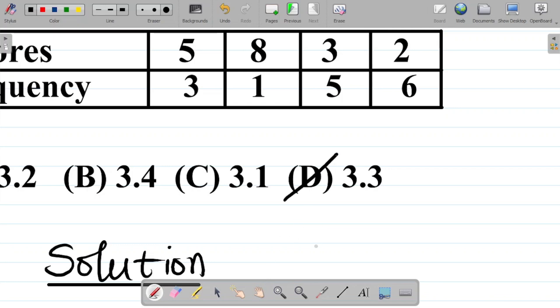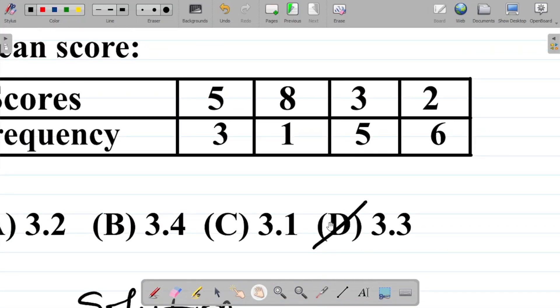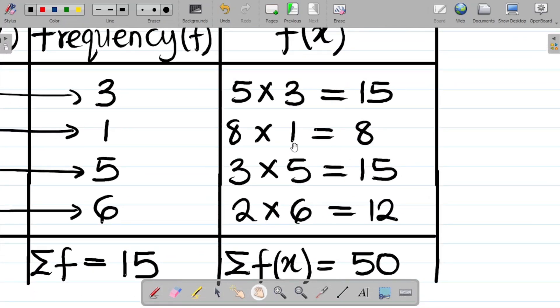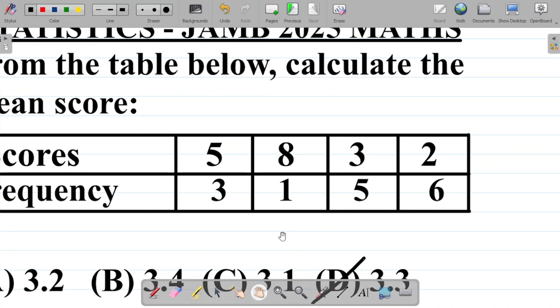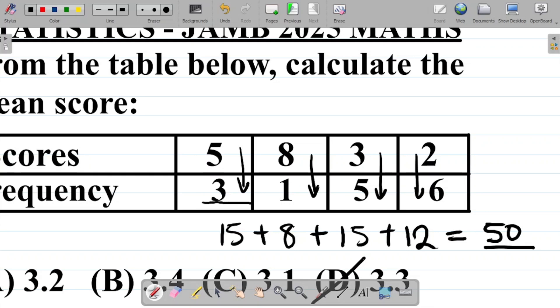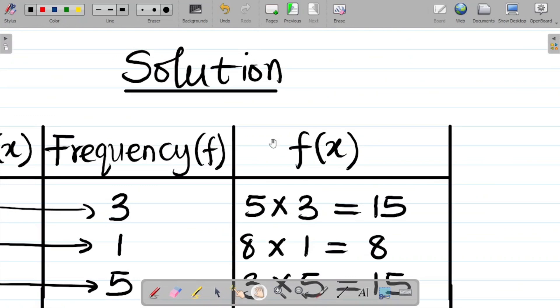So basically, this is how we find this solution. Now there's a faster way of doing this. The faster way is, instead of creating this table, you could just go straight and get your answer very fast. Don't forget that this is a timed exam. So how do you get your answer very fast? Just multiply 5 times 3 is 15, plus 8 times 1, that's 8, plus 3 times 5, that's 15, plus 2 times 6, that's 12. If you do this and you sum them, you have your answer as 50. Simply divide this by the sum of the frequencies, that's 3 plus 1, 4, plus 5, 9, plus 6, that's 15. So 50 by 15 gives you the same answer as 3.3. So this is like a faster way of doing this. I had to break it out this way so that you would understand the solving.